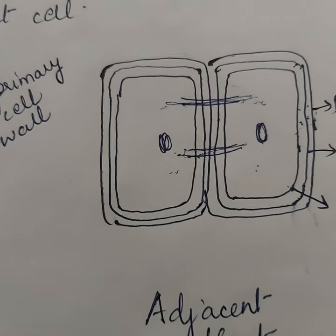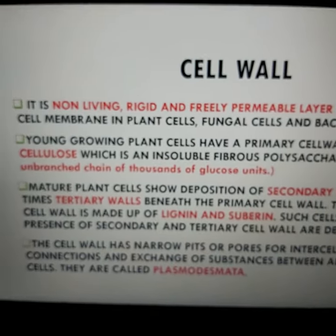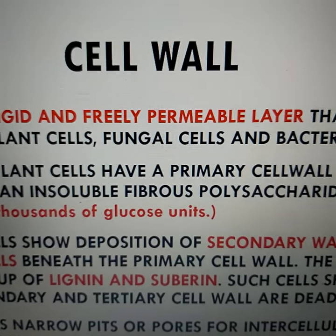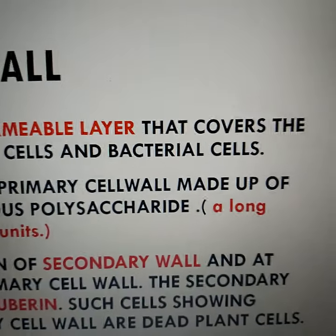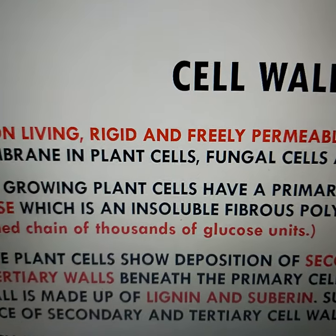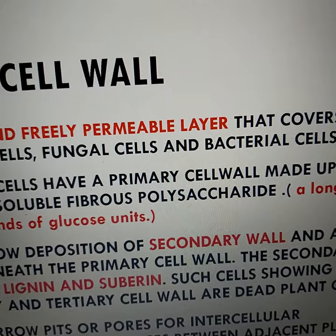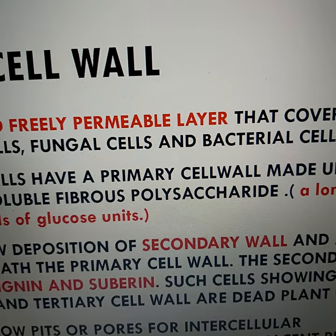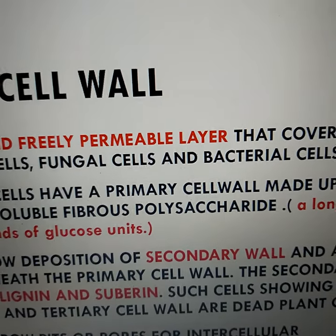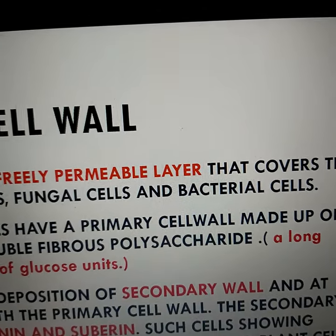The plasmodesmata within can actually allow exchange of substances between adjacent plant cells. To brush up: the cell wall is a non-living, rigid and freely permeable layer that covers the cell membrane in plant cells, fungal cells, and bacterial cells. In plant cells, the primary cell wall is made up of cellulose, which is an insoluble polysaccharide — a tough polymer made up of several glucose units, since saccharide means sugar and poly means many.